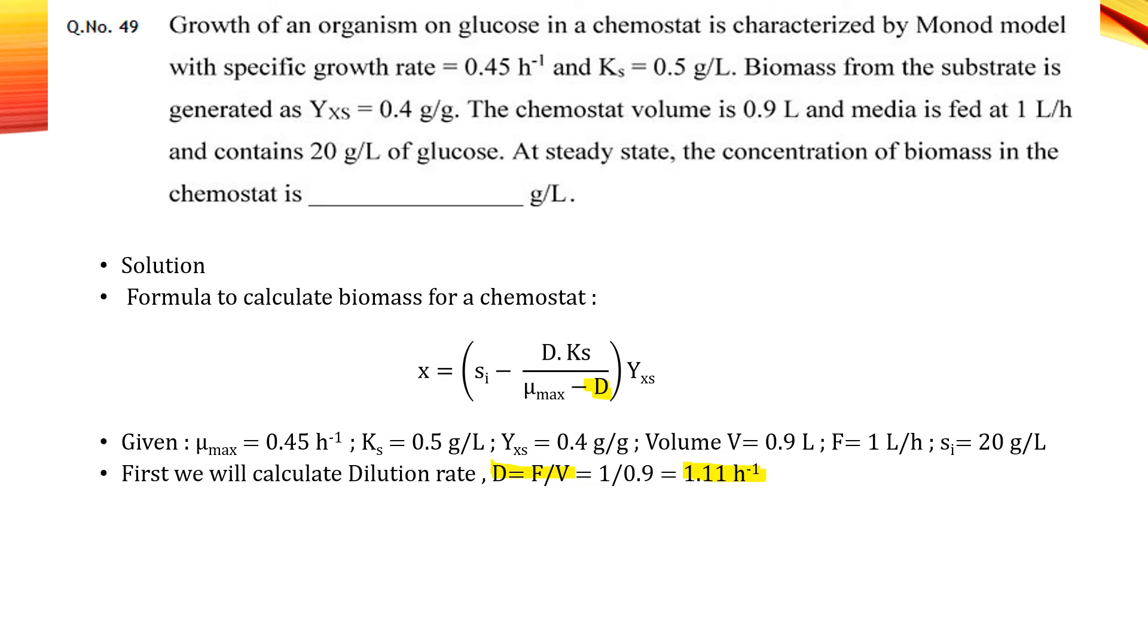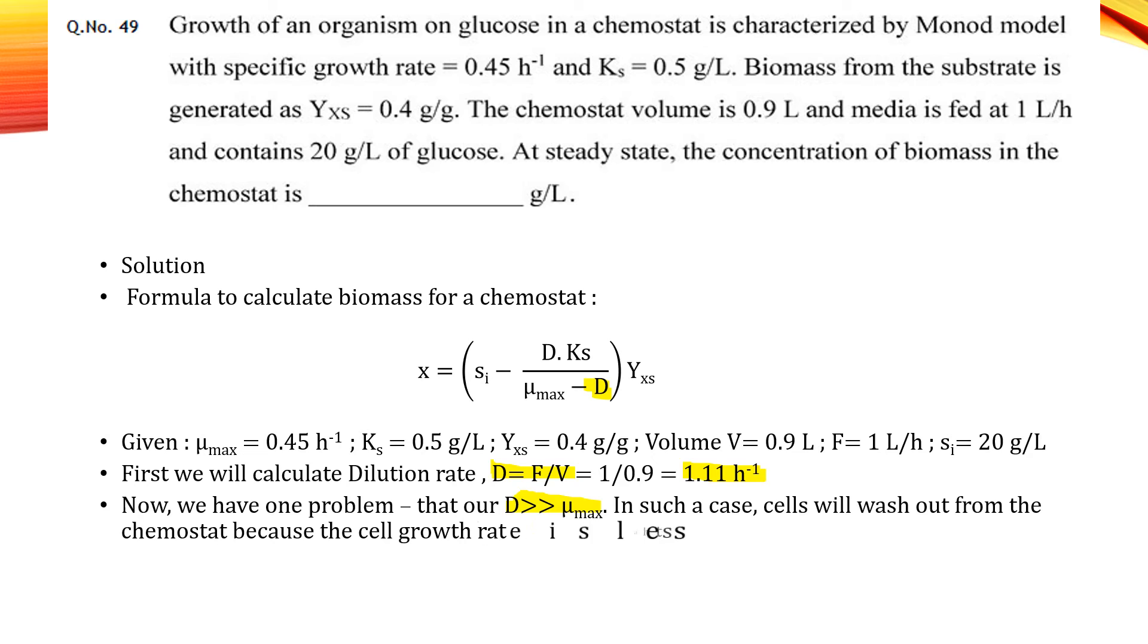Now we have one more problem that our D is greater than mu max. In such cases, cells will wash out from the chemostat. This is because the cell growth rate is less than the dilution rate. So cells will be flushed out before they multiply to counter the dilution rate.